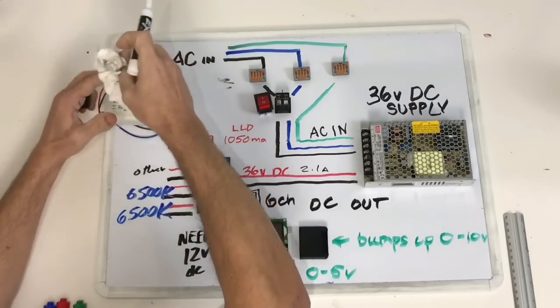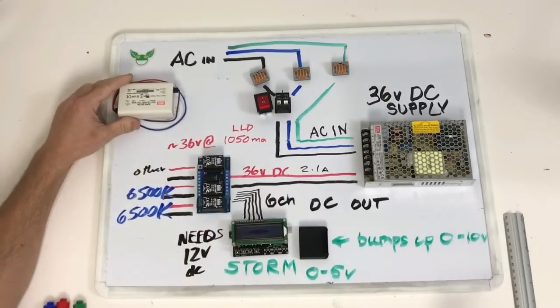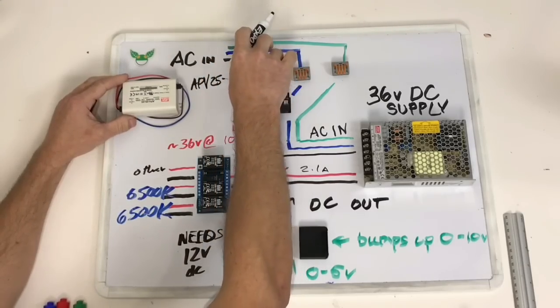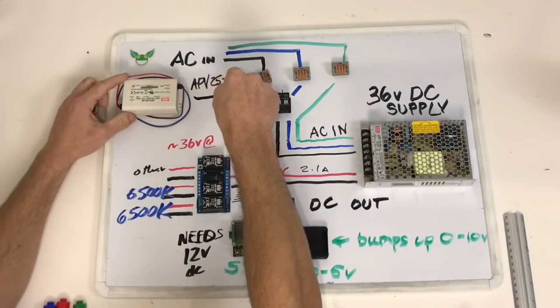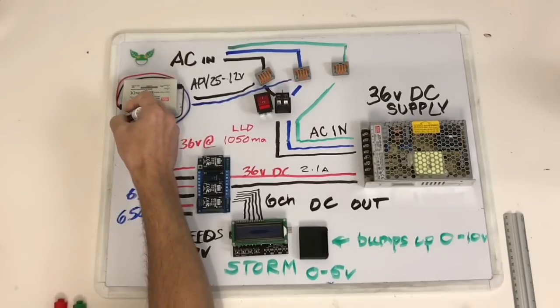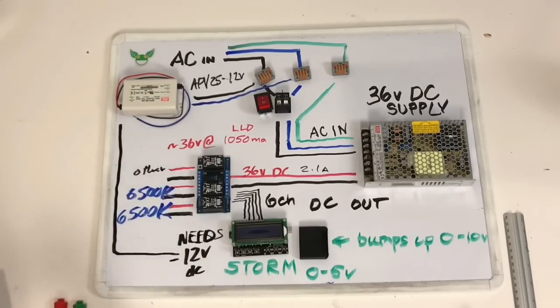I want to eliminate that altogether and replace that with basically the same thing but a hardwired version. This is the Meanwell APV2512, 12 volts, about 2 amps. It'll do 25 watts. That will power the controller as well as power the far-reds.